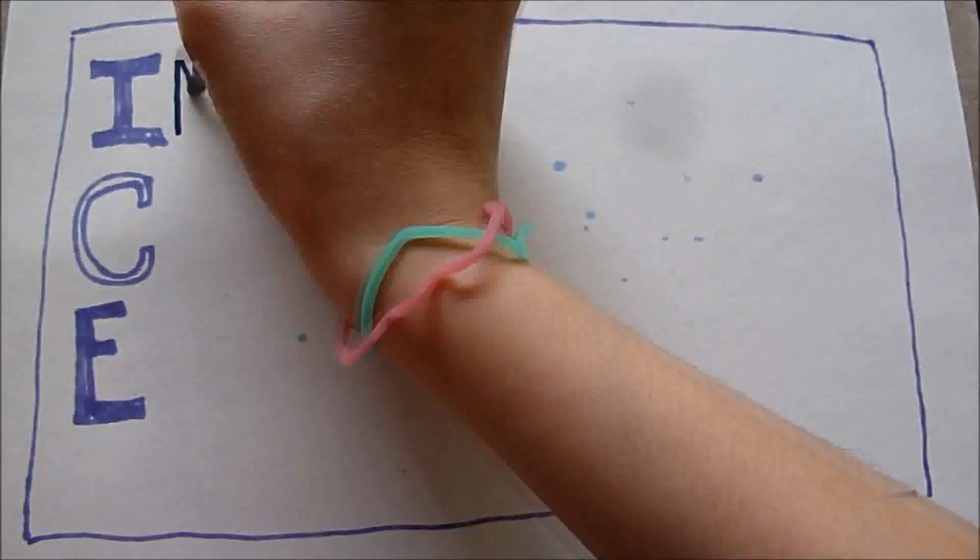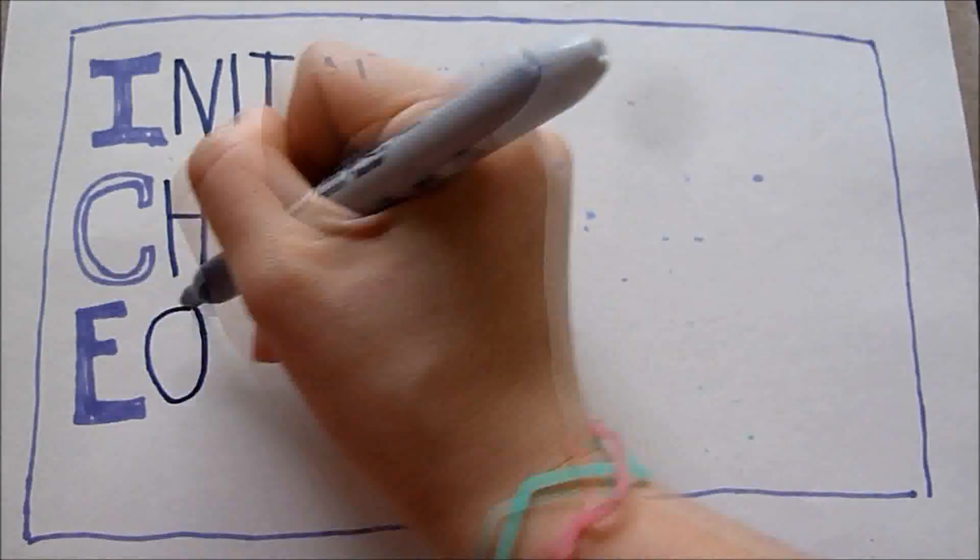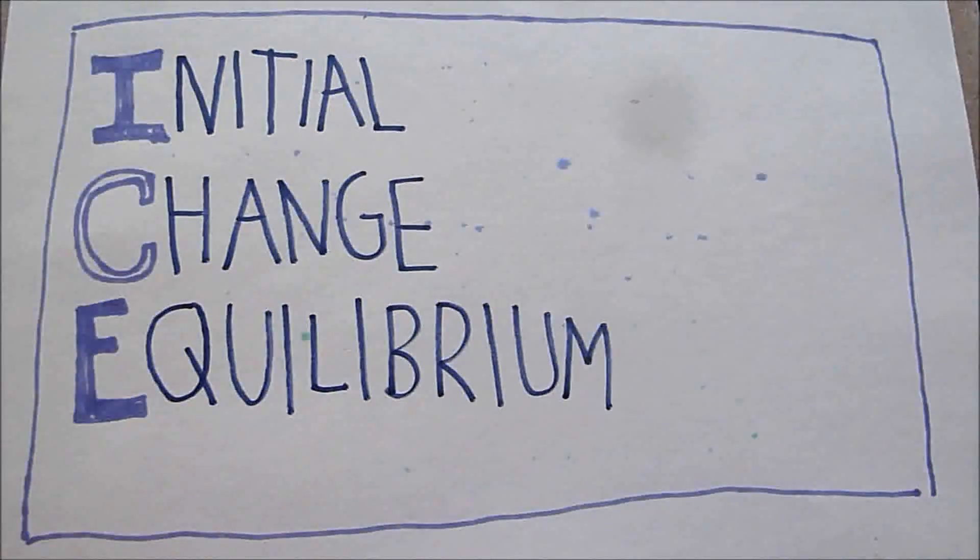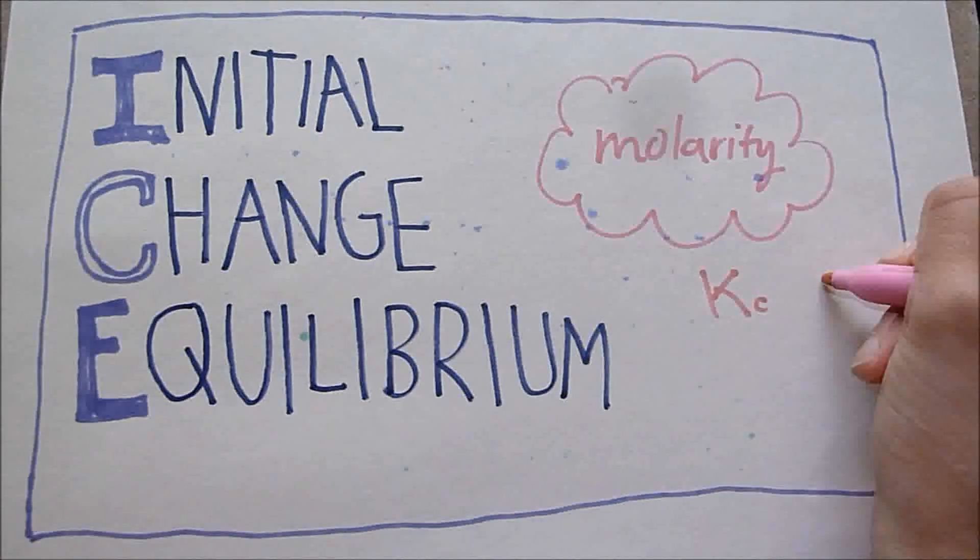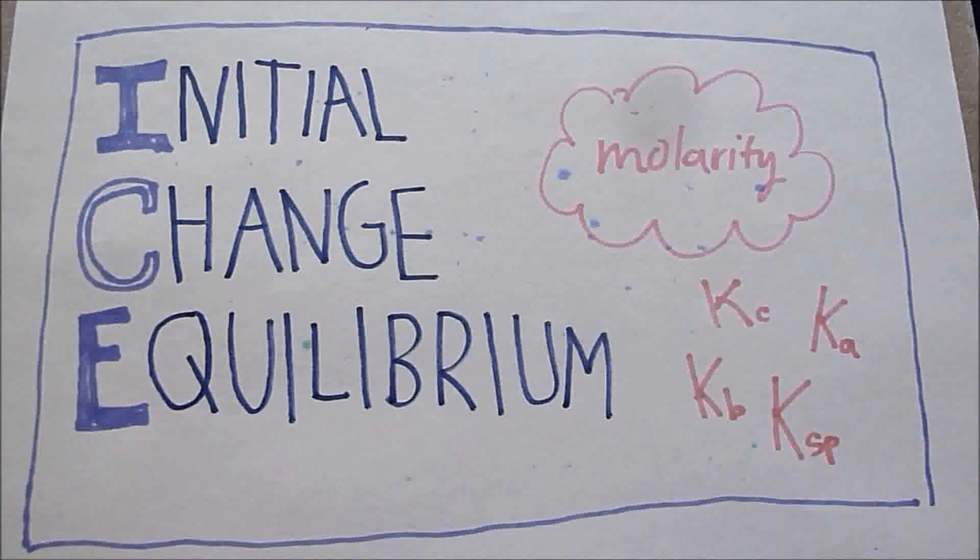So, icebox basically tells you the initial, the change, and the equilibrium values for a system at equilibrium. And you use molarities in this, and this is used for Kc, Ka, Kb, Ksp, stuff like that.